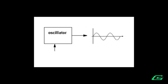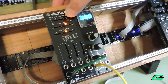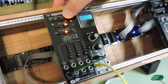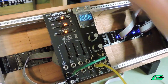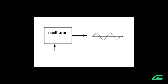Our first function block is an oscillator. It's responsible for generating raw sound or waveforms. When you patch the output, it should be doing something like this. The simplest oscillator doesn't have a way to control the frequency — it's simply a drone.